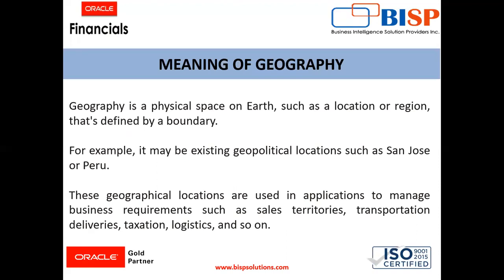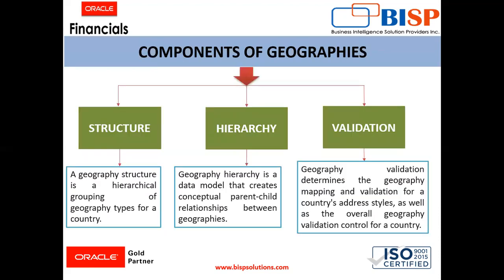Before defining the geographies, we will understand what are the components of a geography. The components of geographies are the structure, hierarchy, and validation. Geographic structure is a hierarchical group of geography types for a country. The hierarchy is the data model that creates a conceptual parent-child relationship between the geographies. Geographic validation determines the geography mapping and validation for the country's address style as well as the overall geography validation control for a country.